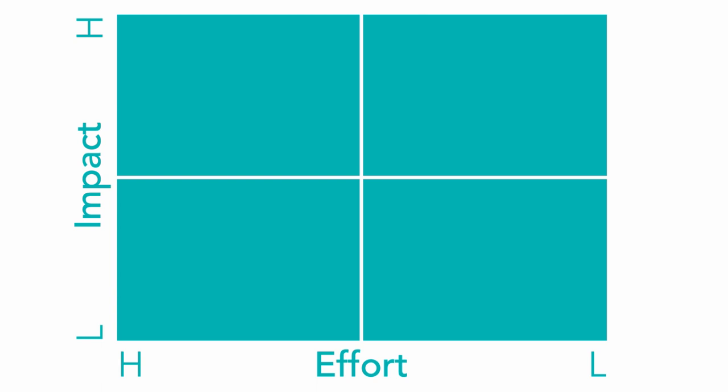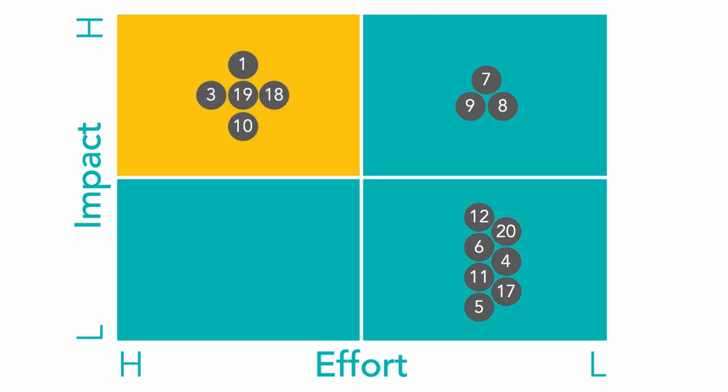The next step is to assign our initiatives to one of these quadrants, placing low effort and high impact ones in quadrant one, low effort and low impact ones in quadrant two, high effort, high impact in quadrant three, and high effort, low impact ones in quadrant four. But it's not quite as simple as that because we actually want to place the initiatives as accurately as possible within each of these quadrants.